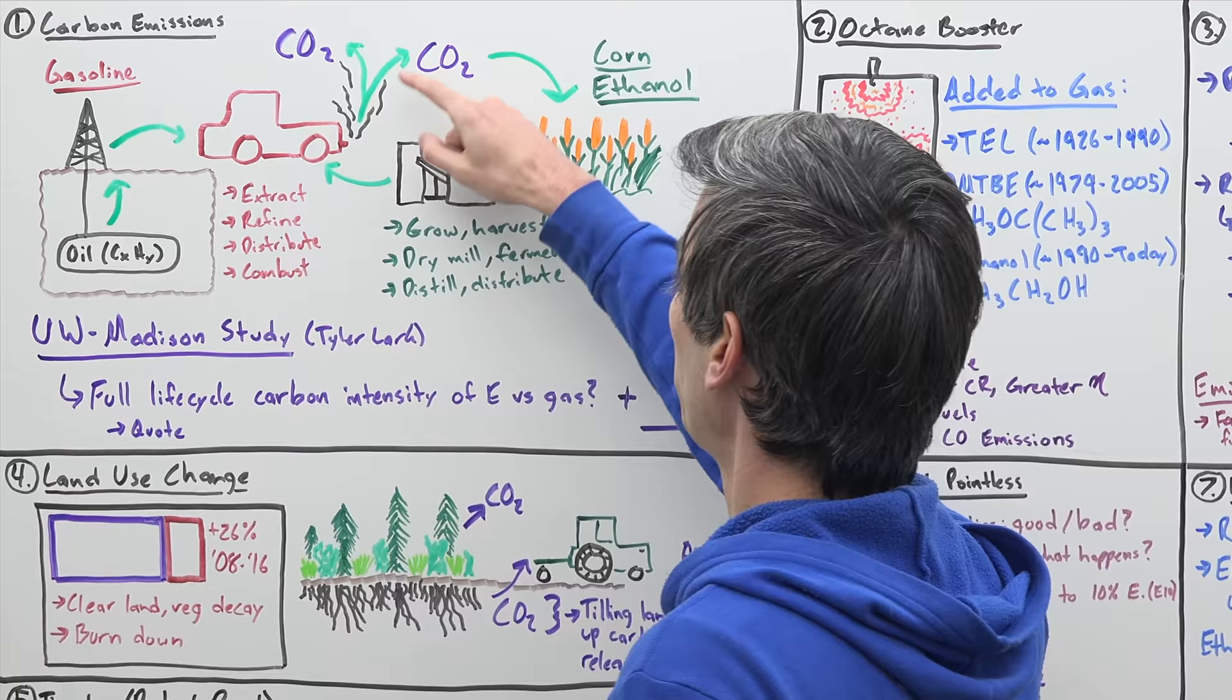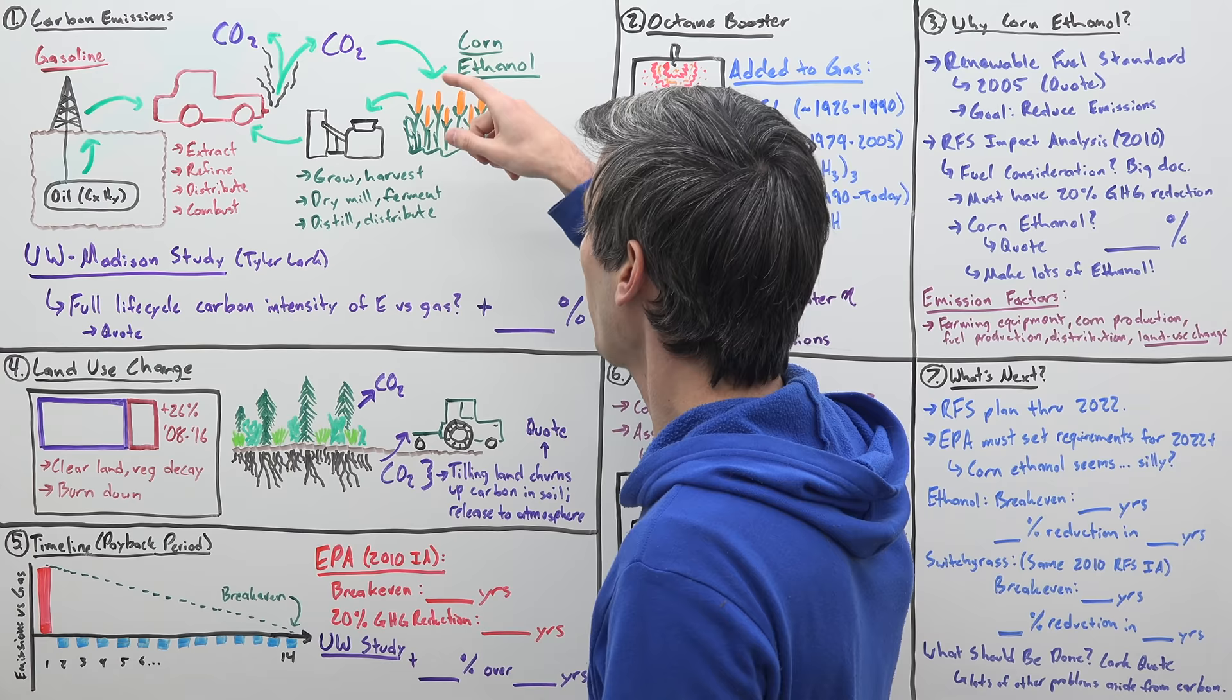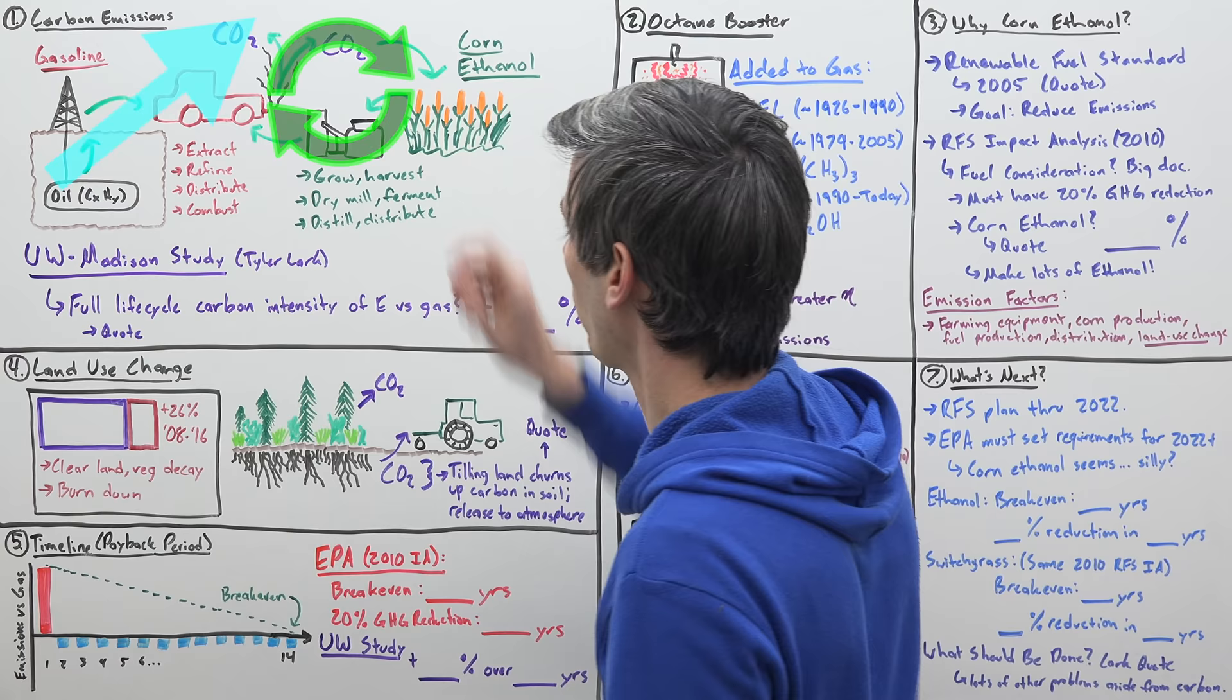That ethanol is eventually burned in your car, and that puts CO2 into the atmosphere. Well, that CO2 then goes back into growing more corn, and you have this endless cycle where you're not taking a one-way path of carbon and putting it in the atmosphere. Instead, you're just recycling it. It's going through this cycle over and over.